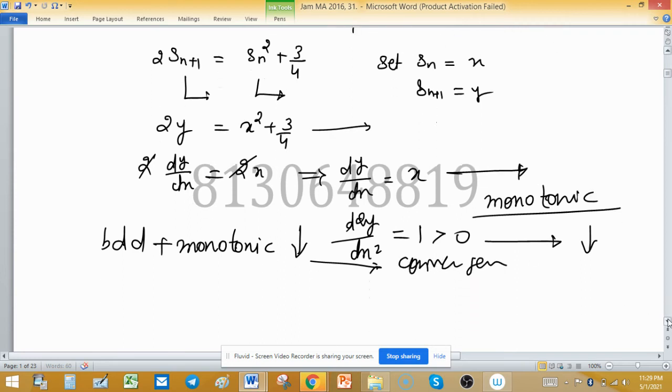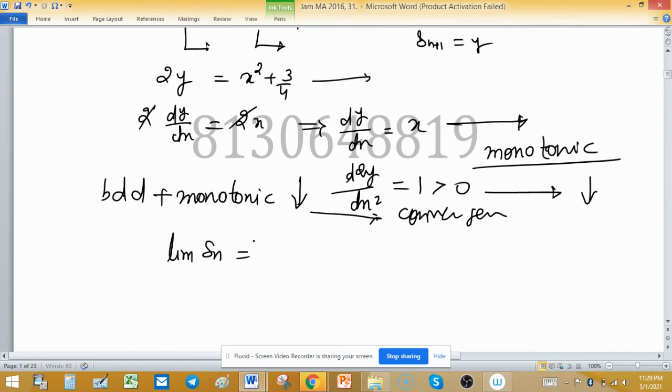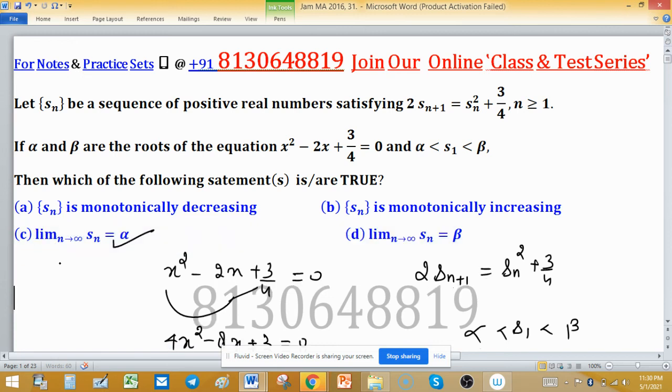If the sequence is convergent then find the limit of the sequence. Limit of SN will be the lower bound, so limit of SN is half. Now check the options. Half is alpha, so option C is correct. And SN is monotonically decreasing, so option A is also correct. Because limit of SN is half and half is the value of alpha. A and C are correct.